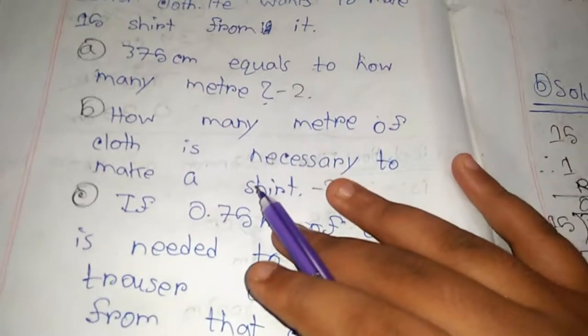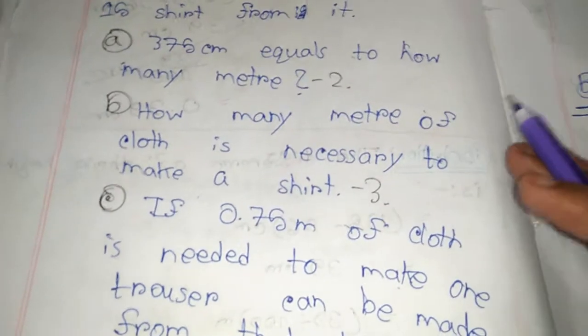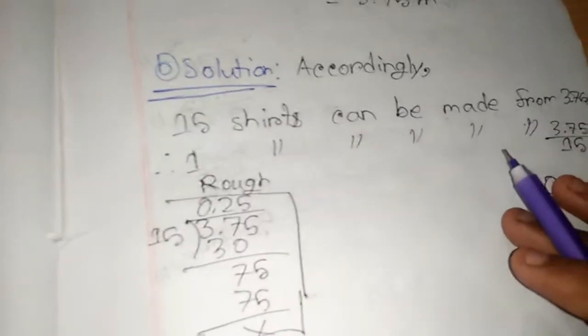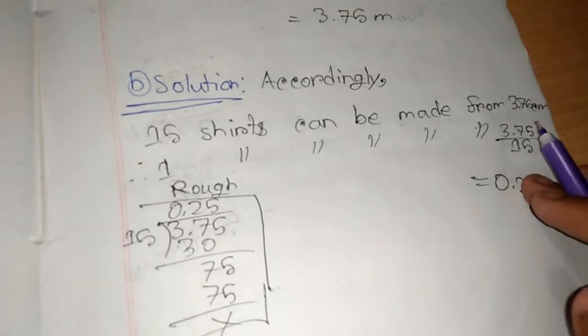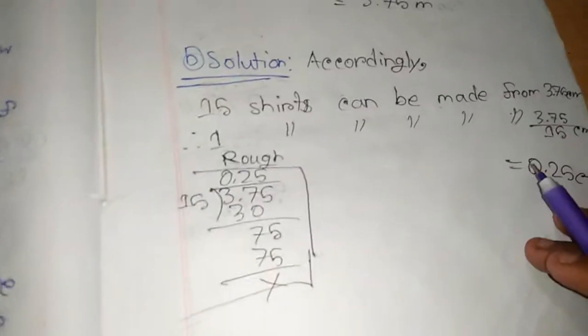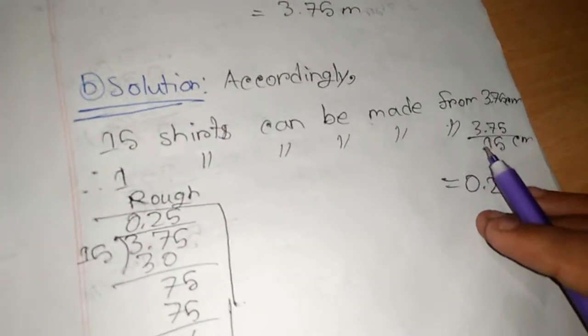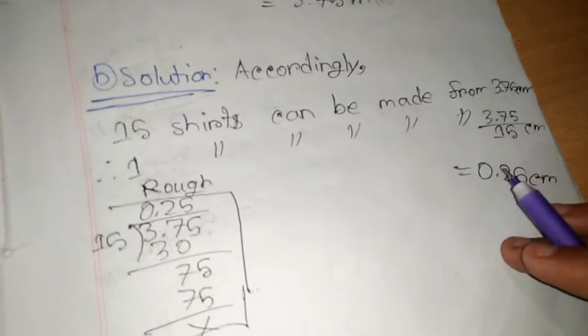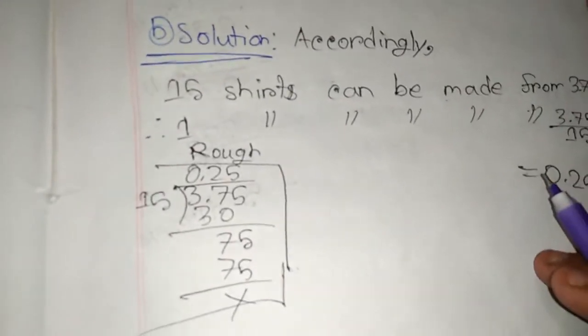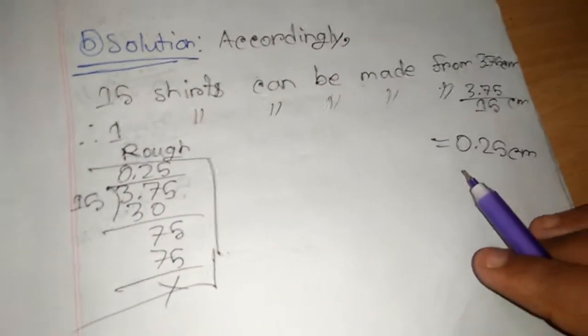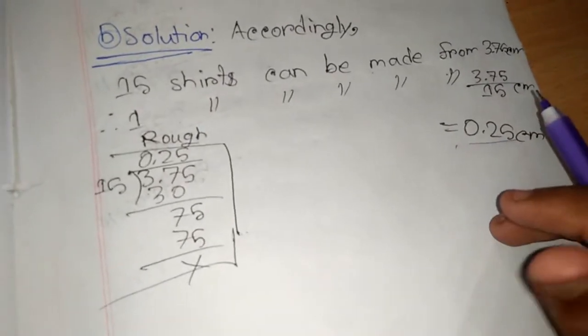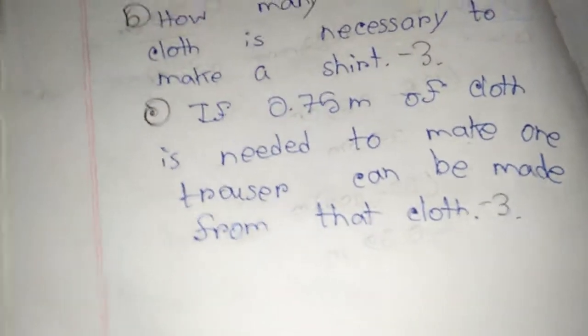Now question B is how much cloth is necessary to make a shirt? 15 shirts can be made from 3.75 meters, so 1 shirt can be made from 3.75 divided by 15. After doing the calculation, we get 0.25, so 0.25 meters is the answer.